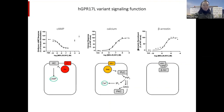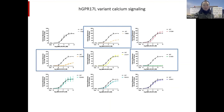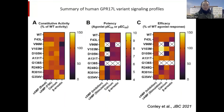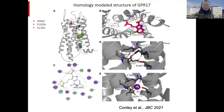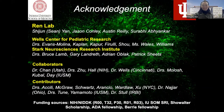In particular, three human genetic mutants — D15N, V96M, and D136S — showed altered signaling. Since the crystal structure of GPR17 is not available, we did homology modeling to review the potential mechanisms of why these genetic variants contribute to the altered signaling outcome. That's the acknowledgement — thank you.